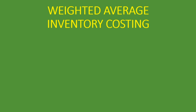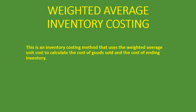Welcome to Countards. In this lesson we are going to be looking at the weighted average inventory costing. This is an inventory costing method that uses the weighted average unit cost to calculate the cost of goods sold and the cost of ending inventory. We're going to go through a thorough example which will help you understand it much better. If you do not know how to calculate it, I'm confident that after this video you will know how to do so.